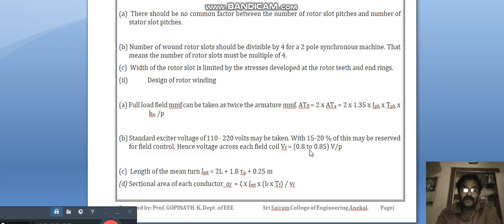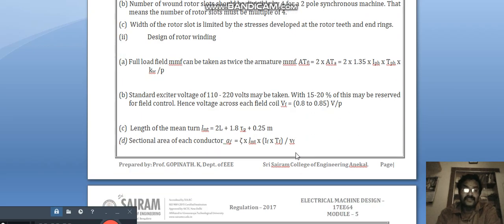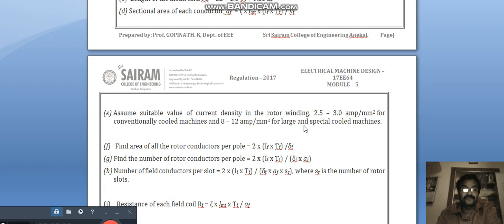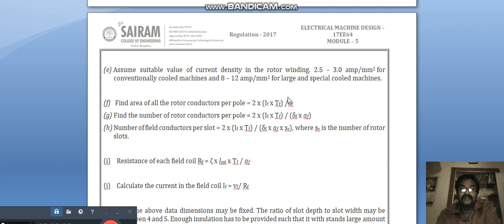Hence voltage across each field coil V_f is equal to 0.8 to 0.85 voltage per volt. Length of the mean turn LMT is equal to 2L + 1.82τ_p + 0.25 m. Sectional area of each conductor A_f is equal to ρ × LMT × I_f × T_f / V_f. Assume suitable value of current density in the rotor winding: 2.5 to 3 amp per mm² for conventionally cooled machines and 8 to 12 amp per mm² for large and special cooled machines.